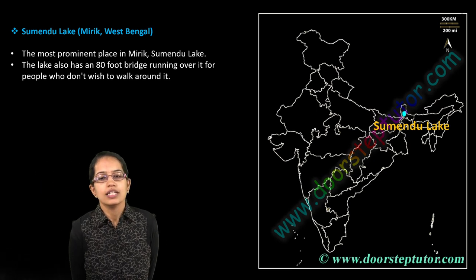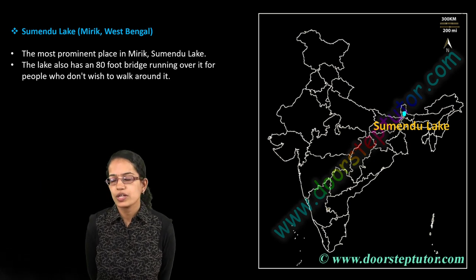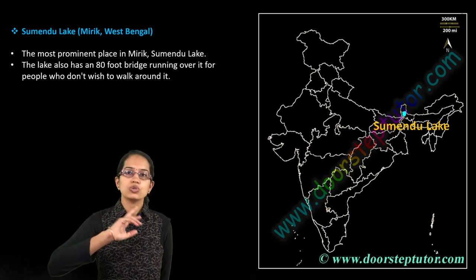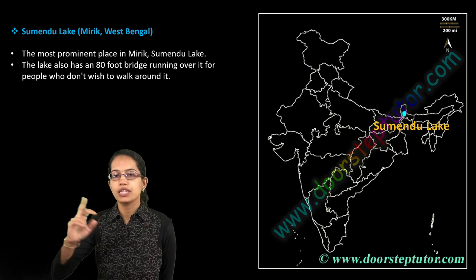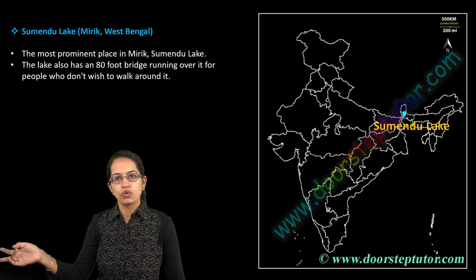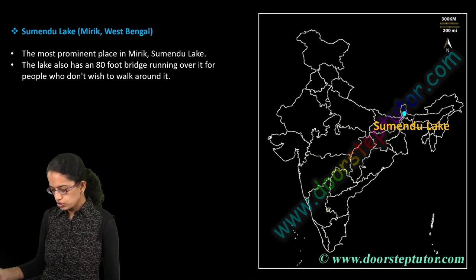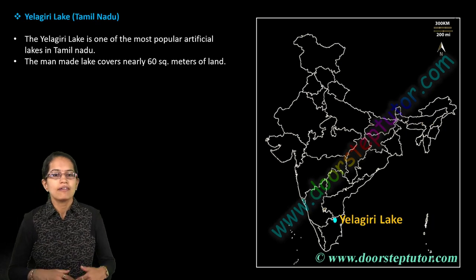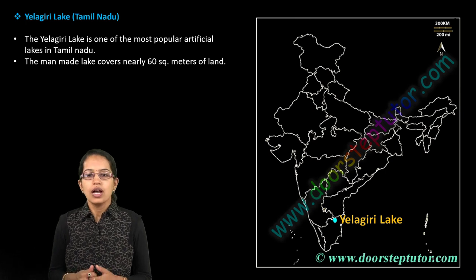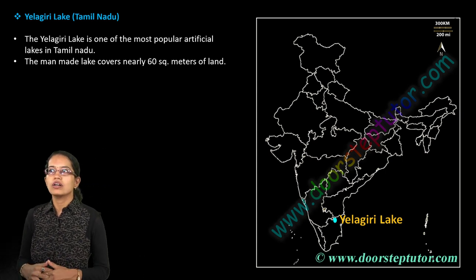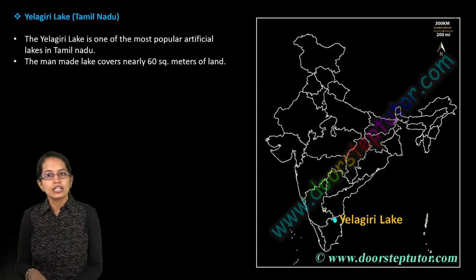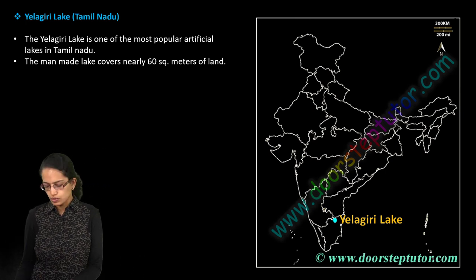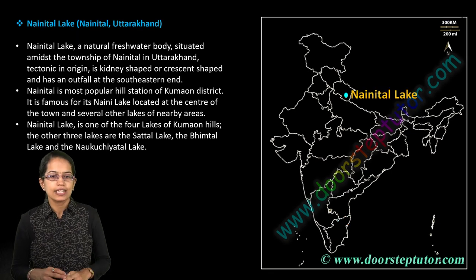Sumendu Lake is located in Mirik, West Bengal. It is a very important location — the area is so vast that a 40-foot bridge runs over the lake through which you can cross. Yelagiri Lake in Tamil Nadu is also one of the very famous artificial lakes in Tamil Nadu — a man-made lake.